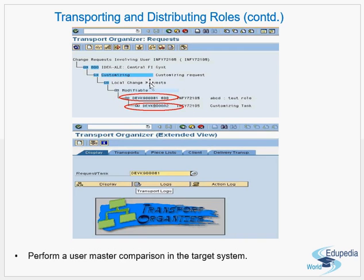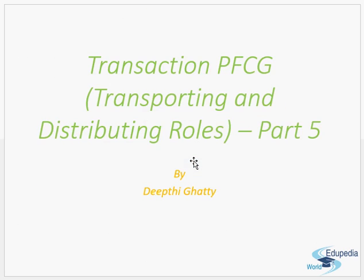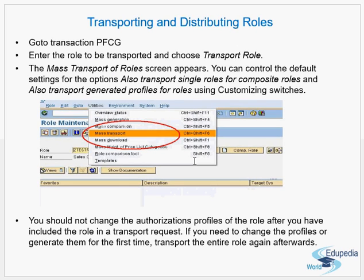The request also has a task. After the transport, you perform a user master comparison in the target system because the new role with new profiles is now reflected there. Since the users are different in the target system, you adjust all the users to pick up the new authorizations.